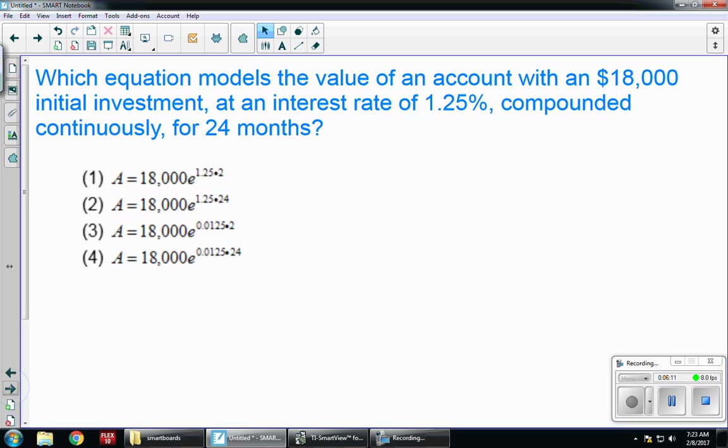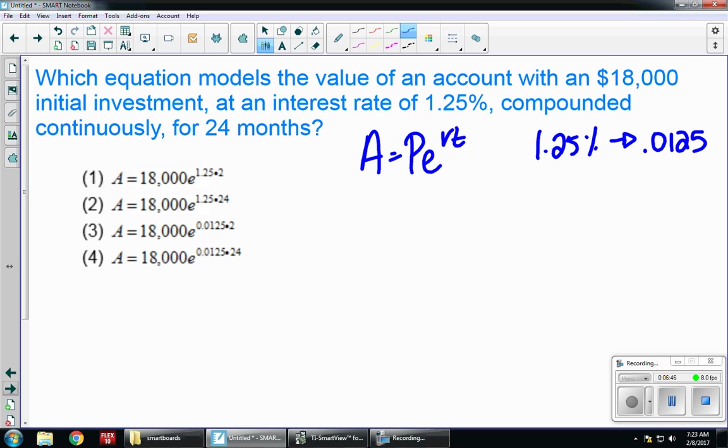All right, let's look at one last question. Which equation models the value of an account with $18,000 initial investment at an interest rate of 1.25% compounded continuously for 24 months? So compounded continuously is A equals PE to the RT. So my initial is 18,000, which all of my answer choices have. E is staying. My rate is 1.25%, which when I convert to a decimal is .0125. So I can cross off choices one and two because those do not have the correct conversion for a percentage to a decimal. And then T is the time in years. So I need to take this 24 months and convert it into two years.